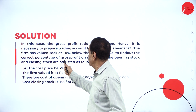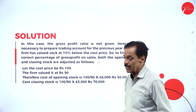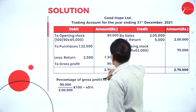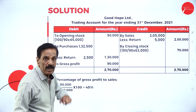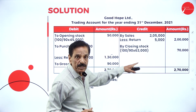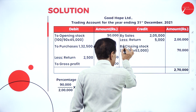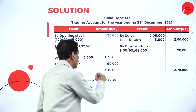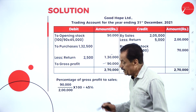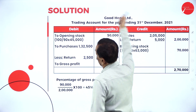Since the gross profit ratio is not given, we must prepare a trading account for the previous year. The firm values stock 10% below cost, so to revert to original figures: multiply by 100/90. Opening stock: 45,000 × 100/90 = Rs. 50,000. Purchases net of returns: 1,32,000 − 2,500 = Rs. 1,30,000. Sales net of returns: 2,05,000 − 5,000 = Rs. 2,00,000. Closing stock: 63,000 × 100/90 = Rs. 70,000. Gross profit = Rs. 90,000. GP% = 90,000 / 2,00,000 × 100 = 45%.